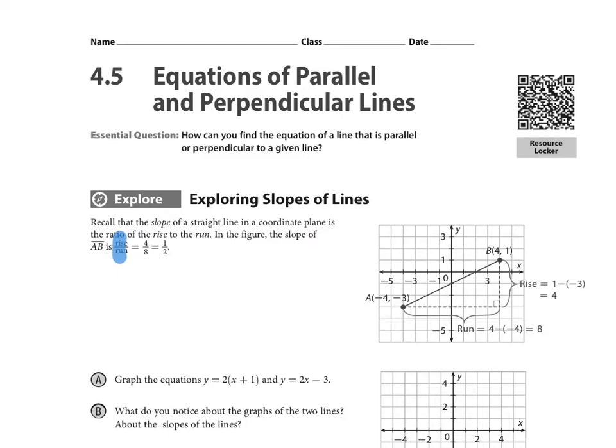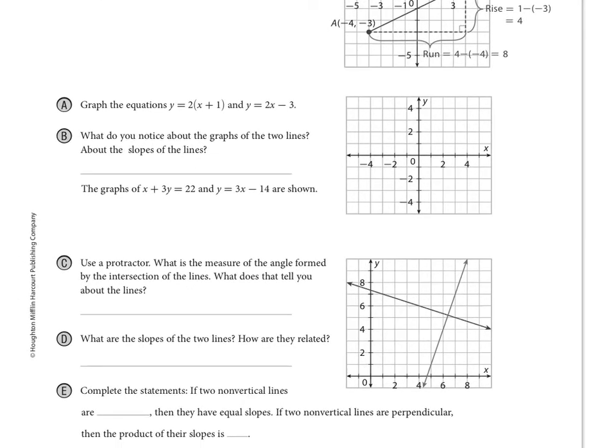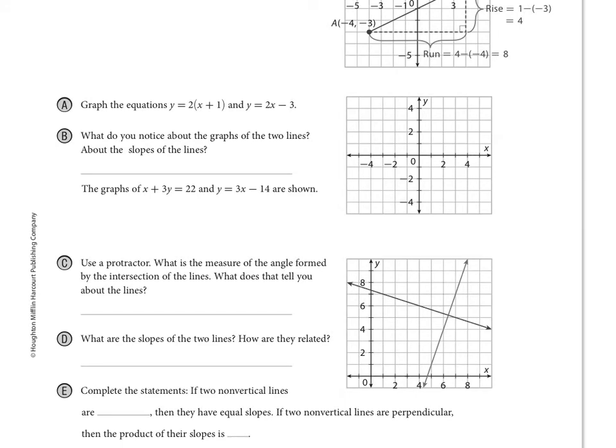So in our explore here, we're going to be talking about first off in part A the equations of lines y equals 2 times x plus 1 and y equals 2x minus 3. So what I would do for this first equation is, of course, I would distribute so we have 2x plus 2. And then as we come over to the graph, remember, we're going to start by graphing the y-intercept right at 2 and then from there we're going to go with our slope triangle rise of 2 and a run of 1. So our next point will be over 1 and up 2 from there and we can make that line.